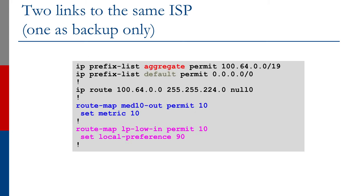Route map 'med-ten-out' sets the metric on all prefixes sent out to the upstream provider. Since we're only announcing the slash 19, it gets a MED of 10 set on it. Route map 'lp-low-in' matches all prefixes and sets local preference to 90 inbound. The end site then sees two paths: one with local preference 100 (the default on router A) and one on router B with local preference 90, achieving the primary/backup setup we were aiming for.